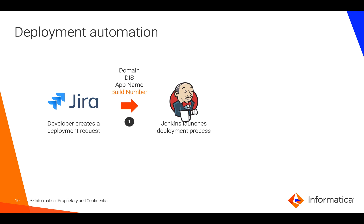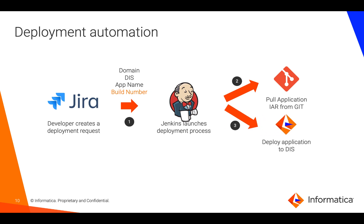A Jenkins process then gets launched, which will pull the application from Git or another version control system and deploy it to a data integration service.